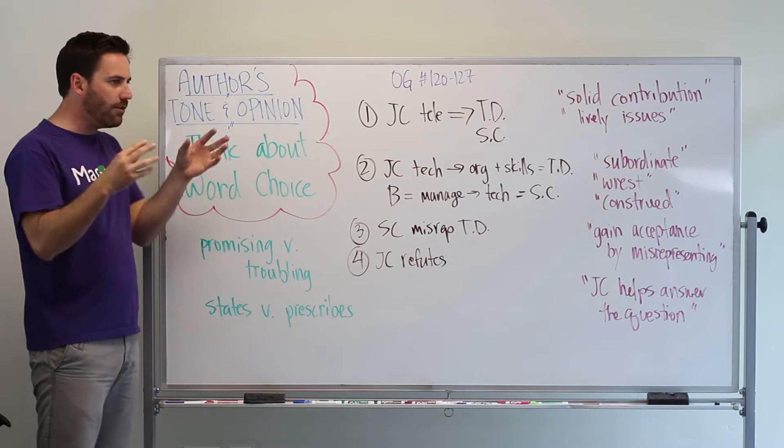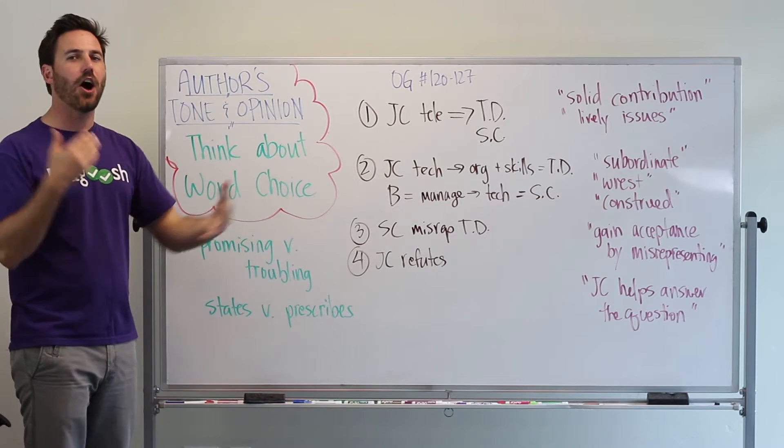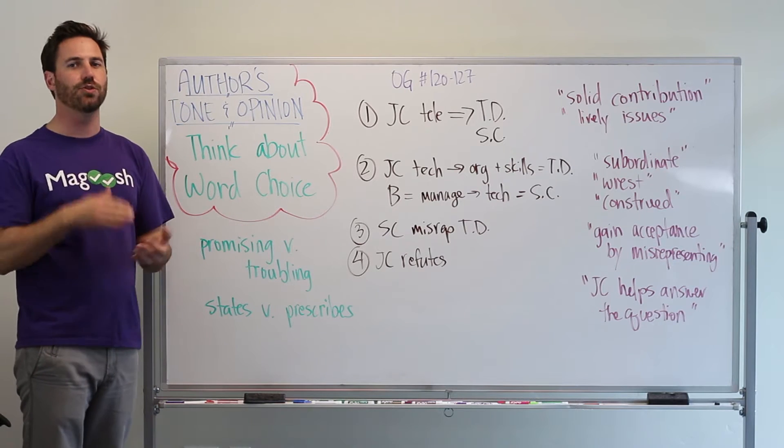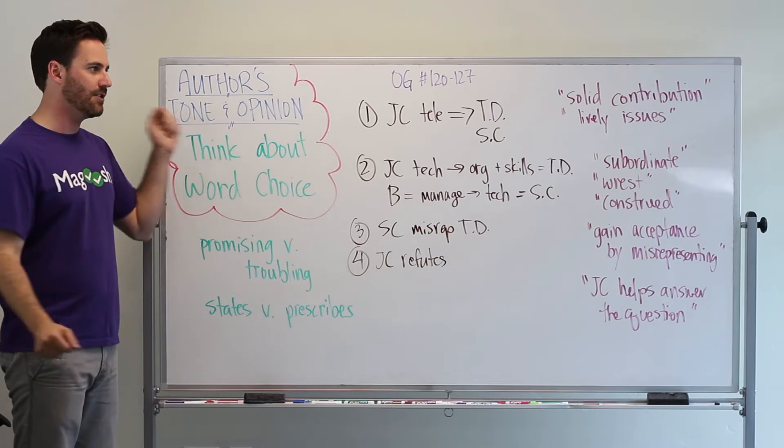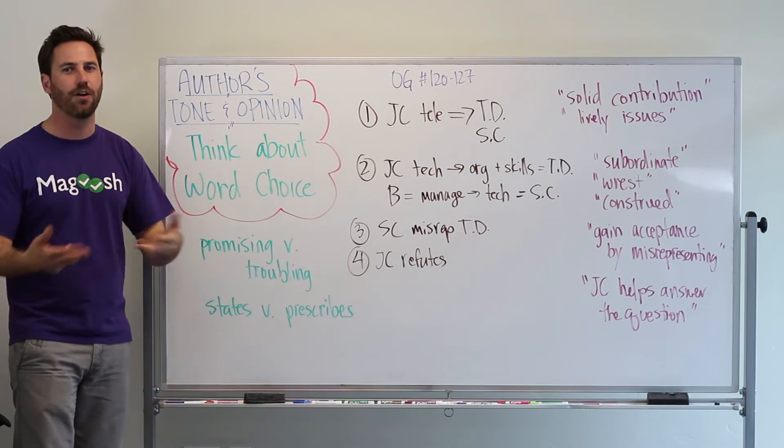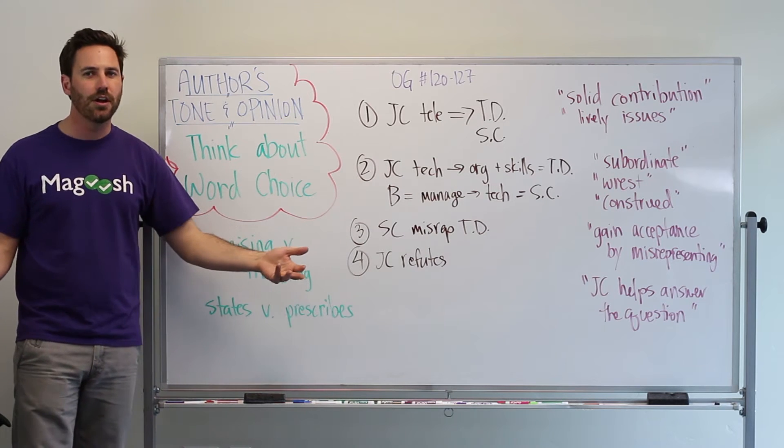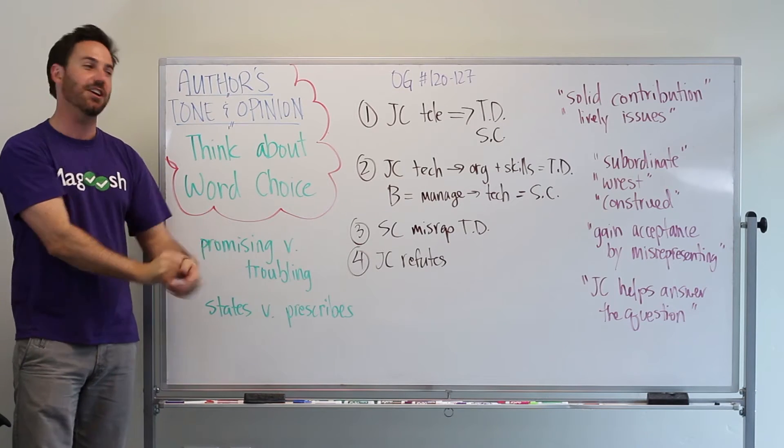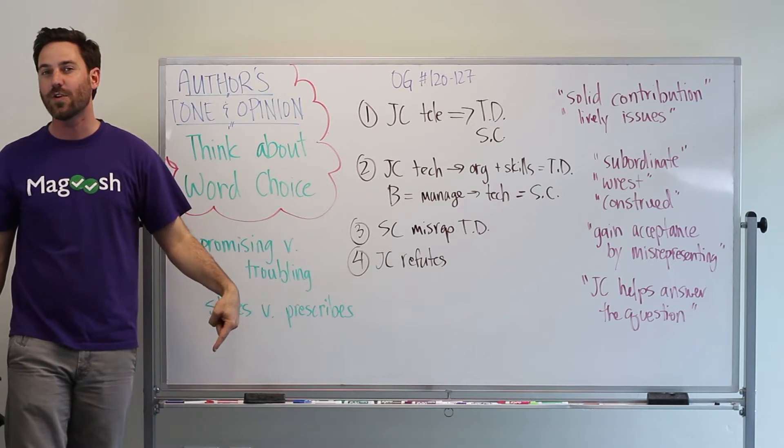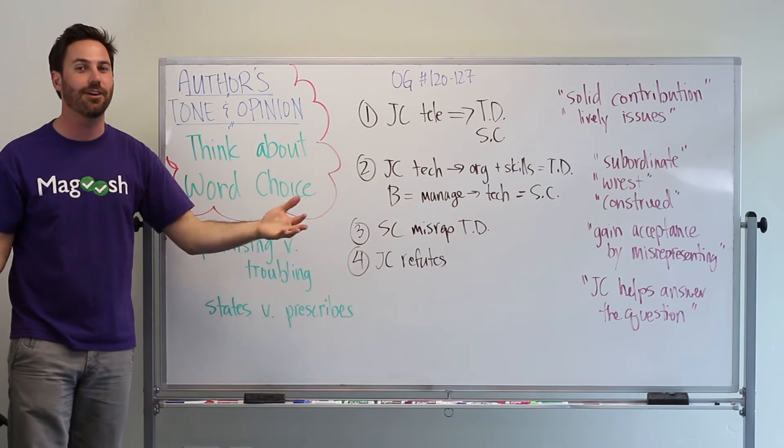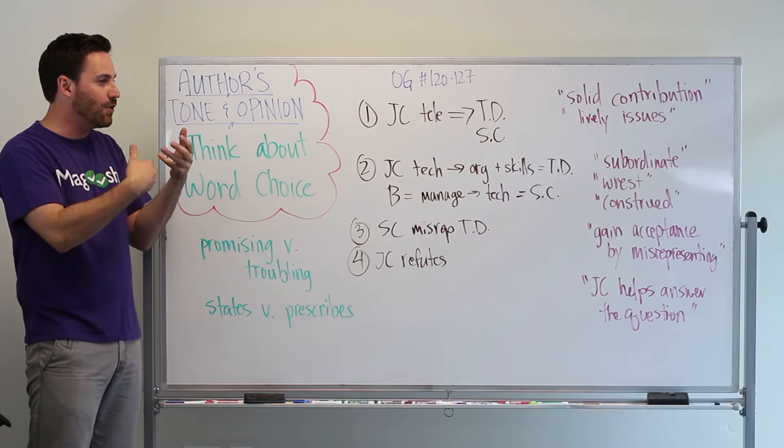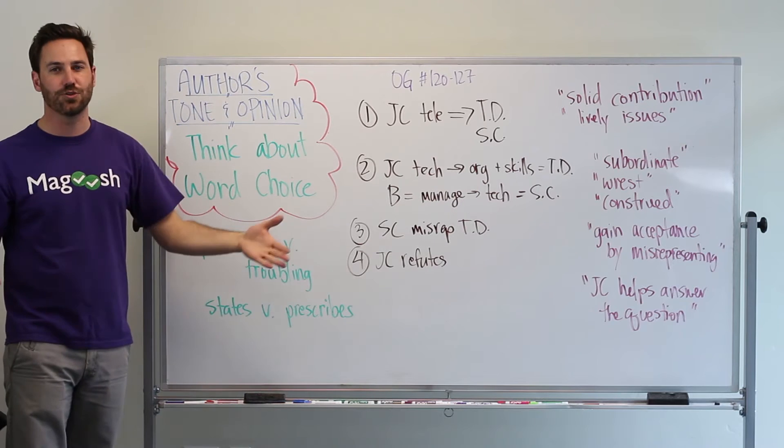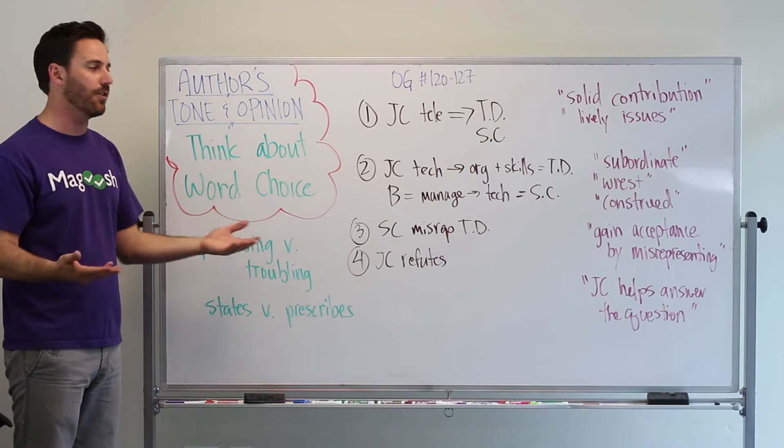The real key to understanding an author's opinion and an author's tone, especially on the GMAT, is to pay attention to the word choices that the author makes. So, the passages on the GMAT are very nuanced. They're very subtle. There's not going to be an author out there who's going to say, I am really upset about this thing or I completely disagree. They're just not going to come out and say it. They want to sound intelligent and they want to sound thoughtful. And so, they won't have extreme statements of their opinion or of their tone.